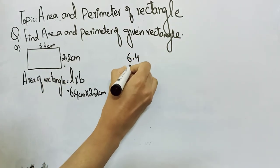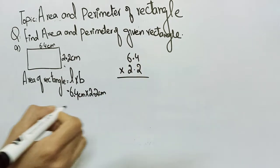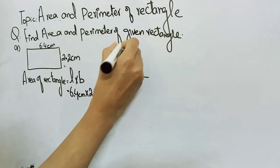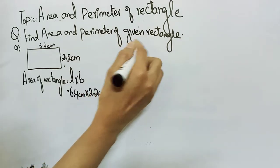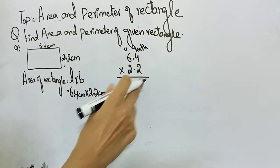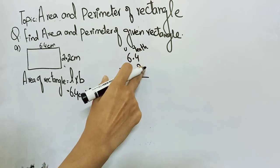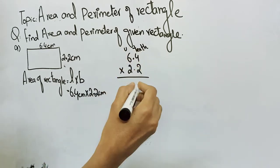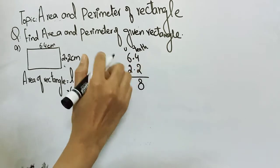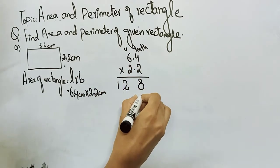Now the question is how we can multiply decimal numbers. We write six point four and two point two. Before the decimal the first value is units, and after the decimal the first value is tenths. We will take the first digit and multiply: two cross four is eight, and two cross six is twelve.